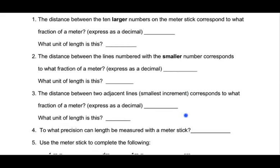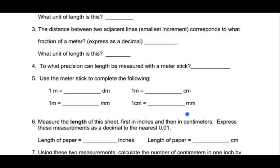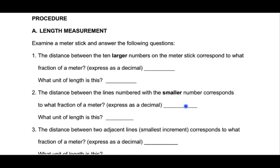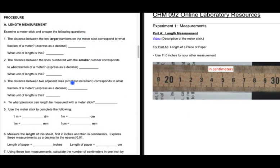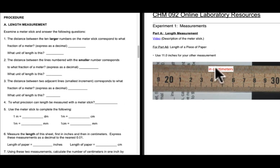Now we come to the lab itself. Let's switch views so we can better compare the report sheet portion and the actual lab data portion. On the left-hand side is the report sheet — the lab manual you purchased from the bookstore — and what you'll find on Moodle is a link to a PDF.